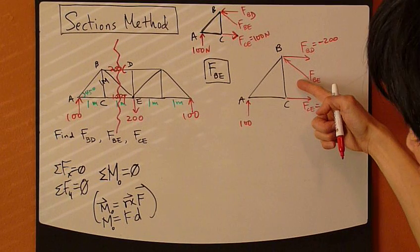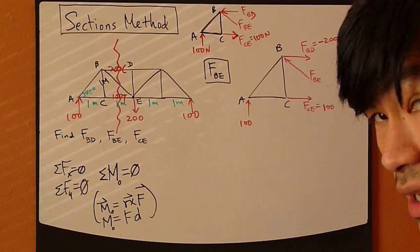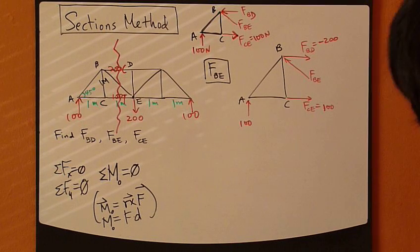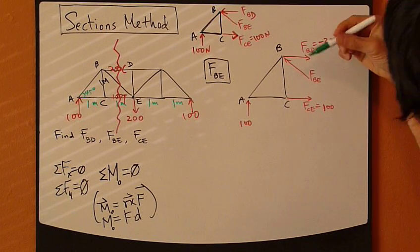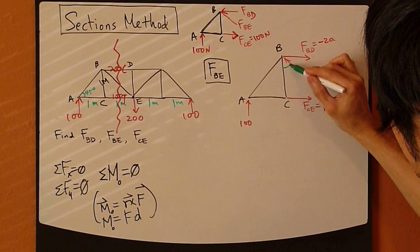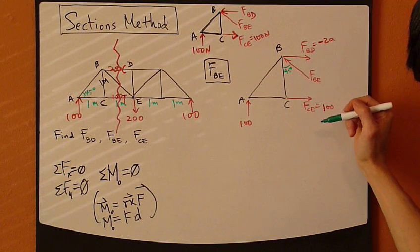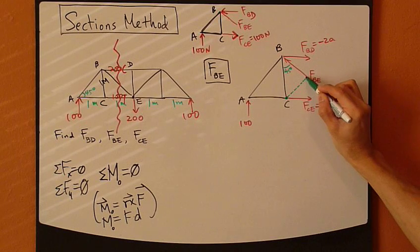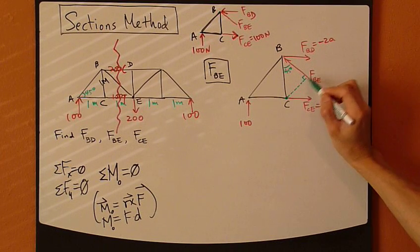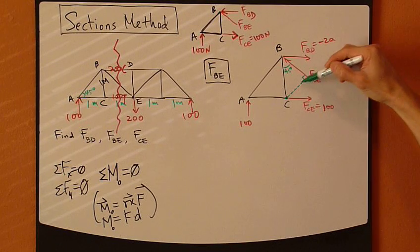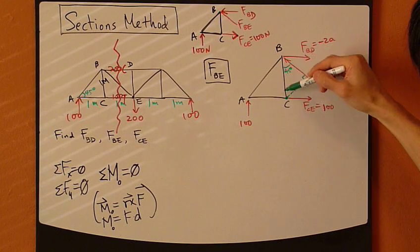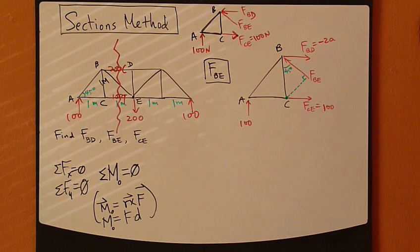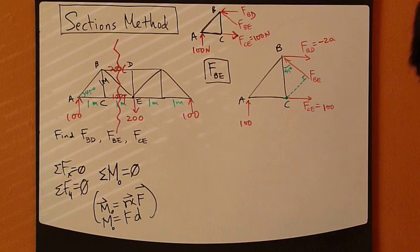BE will create a moment, but the problem is: what is the distance D between joint C and BE? From geometry, BE is at a 45-degree angle, so the shortest distance between joint C and BE is the perpendicular distance. Knowing this triangle has 1 meter and 45 degrees, you can figure it out quite easily.